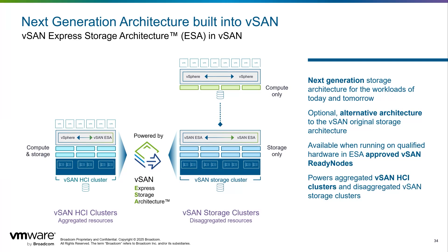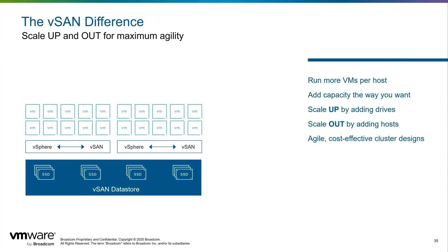With vSAN ESA, you can easily choose one of two deployment options: an aggregated vSAN HCI cluster or the disaggregated vSAN storage cluster. No matter what you choose, the vSAN Express Storage Architecture unlocks the capabilities of modern hardware to allow the workloads of today and tomorrow to perform as the hardware allows. The tremendous efficiency of vSAN means it can run more VMs per host than any other HCI system that is not integrated into the hypervisor.